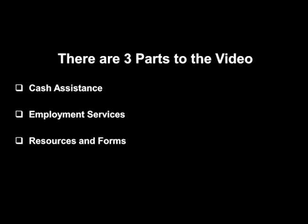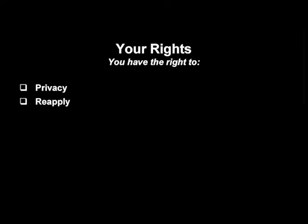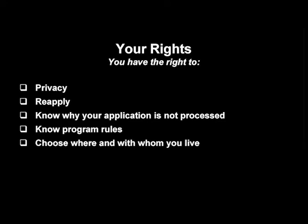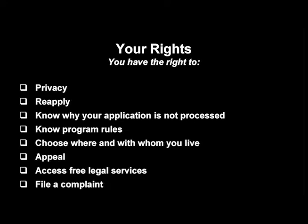The following is some information that you will need to know before we get into the programs. First, we'll talk about your rights. You have the right to privacy — this means that we cannot share any information with anyone unless we have a written release from you. You have the right to reapply when your benefits stop, the right to know why if your application is not processed promptly, and the right to know the program rules for each program you are applying for. Each program has different rules. You have the right to choose where and with whom you live, the right to appeal, access to free legal services, and a right to file a complaint.